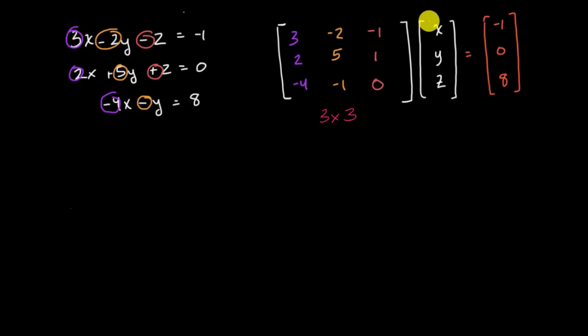And then you're going to multiply that times this vector, which is really the vector of the unknown variables. And this is a three by one vector. And then you would result in this other three by one vector, which is a vector that contains these constant terms right over here.